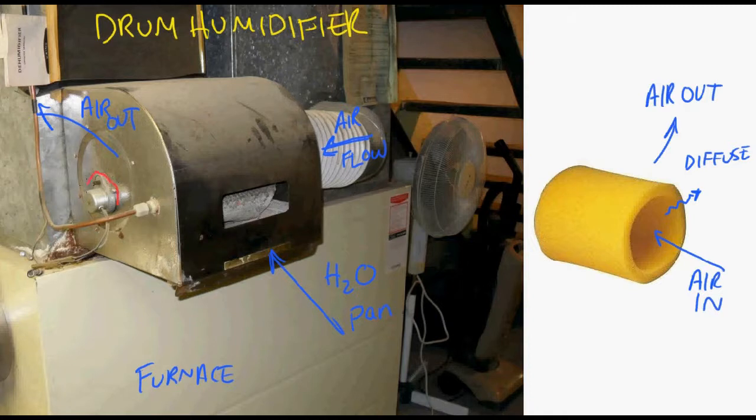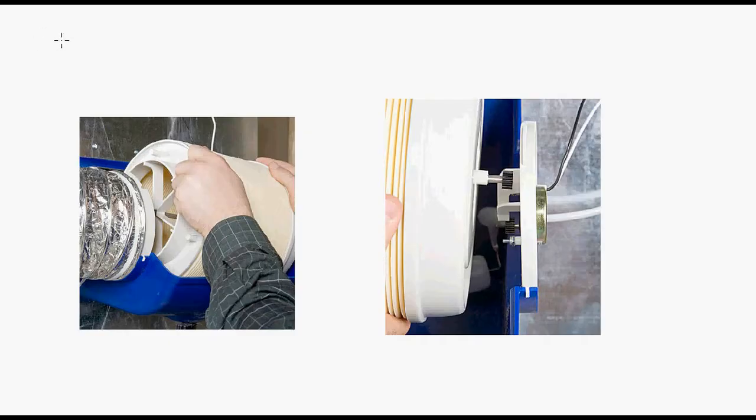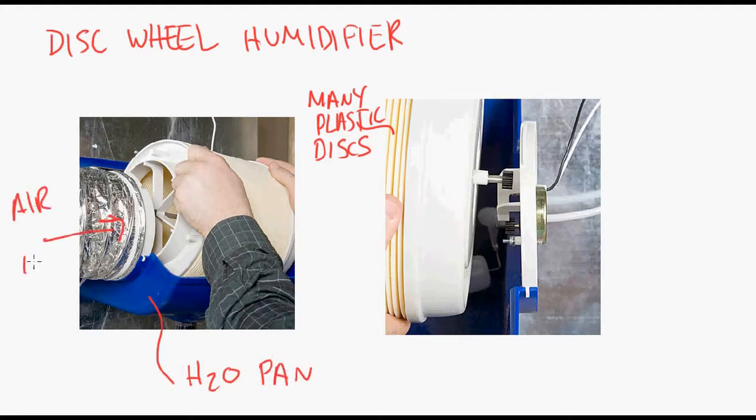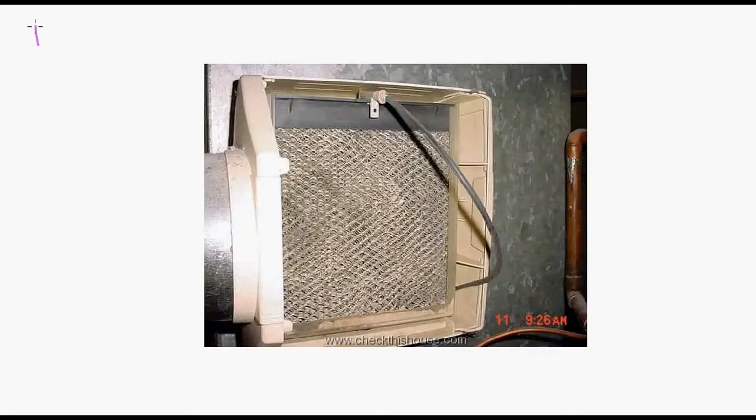Now this sponge rotates about an axis here on the drum. So it's rotating through the pan. So it's always a wet sponge that the air is going through. Similar to that is a disc wheel humidifier. You have this wheel that rotates that consists of many plastic discs. And you also have a water pan that rotates through. And the plastic discs wick up the water through it. The air diffuses through those wet plastic discs and picks up humidity as it evaporates.